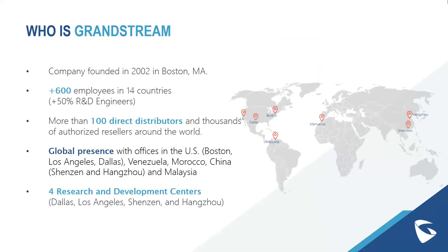For those who may not be super familiar with Grandstream, we were founded in 2002 in Boston. We have over 600 employees in 14 countries, and more than 100 direct distributors and thousands of authorized resellers all around the globe. We have a global presence with offices in the United States, Venezuela, Morocco, China, and Malaysia. We actually have four research and development centers: Dallas, Los Angeles, Shenzhen, and Guangzhou.